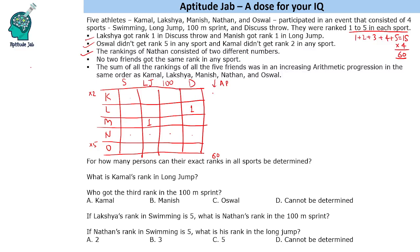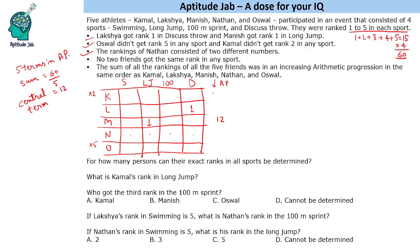Now if there are 5 terms in an AP and their sum is 60, the central term would be 60 divided by 5, which equals 12. So the middle term of the AP is 12 — this is an important result we need to solve the problem.